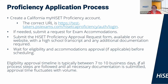The proficiency application process. In order to work through the proficiency application process, the first thing you will need to do is create a California HiSET Proficiency Account. The correct URL for this is https://test-takers.psiexams.com/HiSETCA-proficiency/off/login. If needed, submit a request for exam accommodations at the same time you are applying for your eligibility. Submit the HiSET Proficiency Approval Request form available on our website with a high school transcript and any additional documentation that's required. Wait for eligibility and accommodations approval, if applicable, before you schedule.